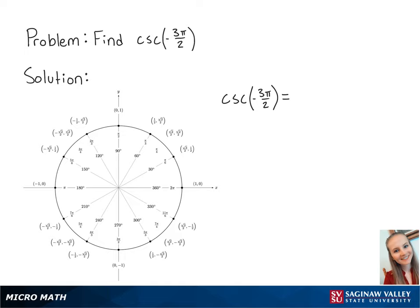For this problem, we're going to find cosecant of negative 3 pi over 2. Cosecant of negative 3 pi over 2 is equal to 1 over sine of negative 3 pi over 2.